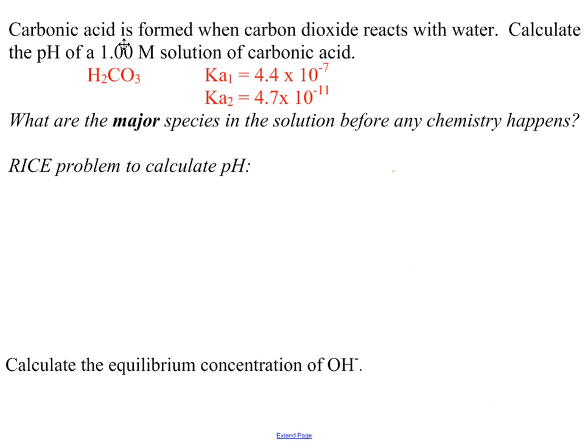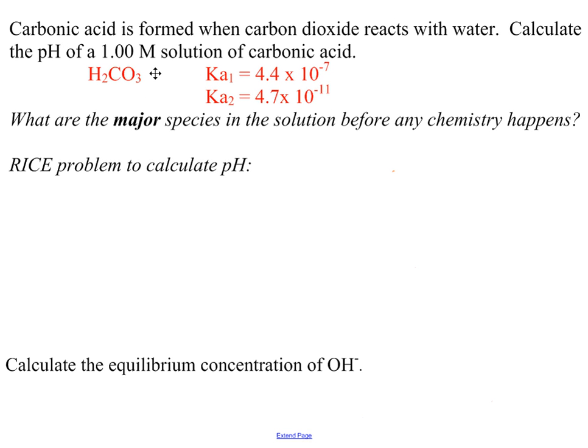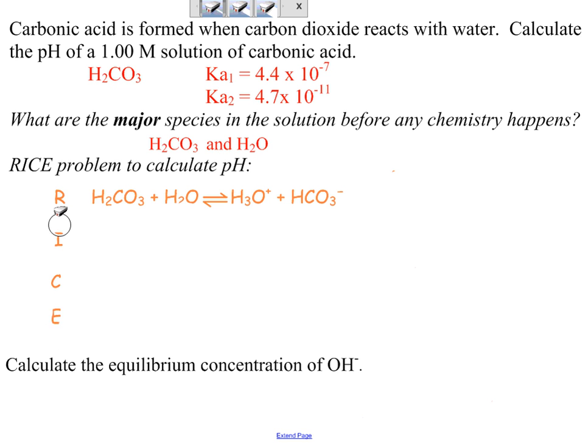So let's try a sample problem. We can have carbonic acid in water. Let's find the pH of one molar carbonic acid. I have two equilibrium constants. The first one is for losing the first hydrogen, the second one for losing the second hydrogen. There's about a difference of 10,000 between the two, so we can call those pretty different. To solve this problem, the first thing we need to do is figure out what's in there before any chemistry happens. There's carbonic acid because we put it there, and there's water because it's a solution. Now, let's figure out a RICE problem to find the pH. This is your standard old RICE problem. So pause and find the pH.